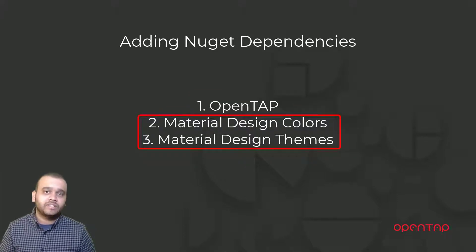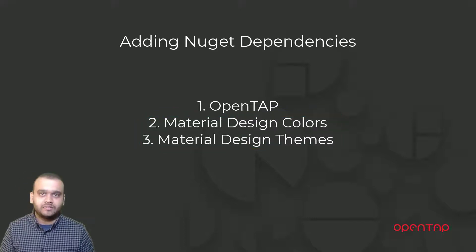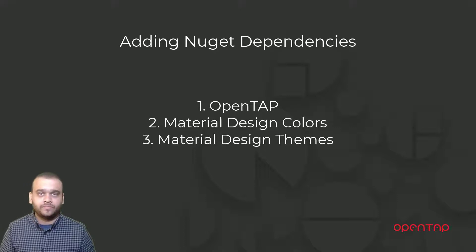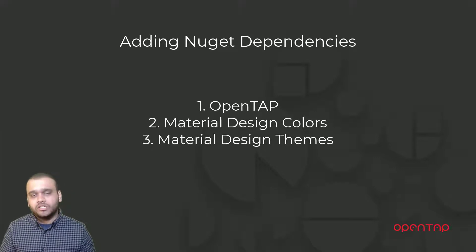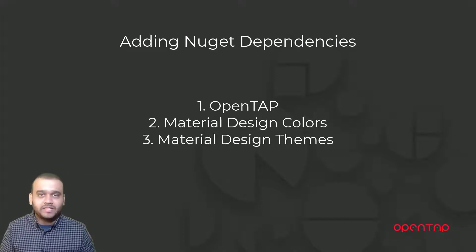Material Design Themes and Material Design Colors are a couple of GUI related NuGet packages that I'm going to be using to make the GUI a little prettier and bring in some colors and themes. There are several open source GUI libraries available such as MahApps, Material Design, Handy, and so on. If you are familiar with any other GUI related libraries, you can feel free to use them. I've used the Material Design library because it has pretty good documentation and is easy to get started with. Our focus is on the OpenTab library rather than the GUI related packages, so I will link all the basic instructions and tutorials for using them. Once we add these NuGet packages to our project, we are all set and ready to go.